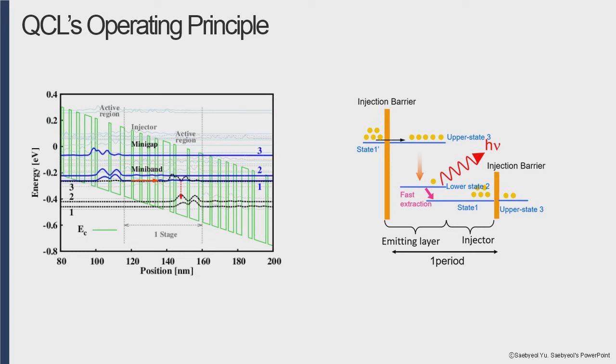By repeating this series of cascade operations, it is possible to emit a plurality of photons per one injected electron.